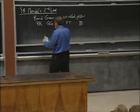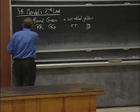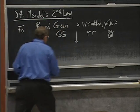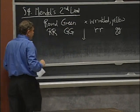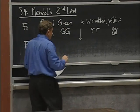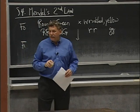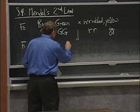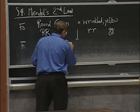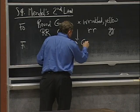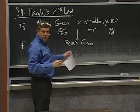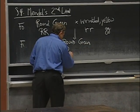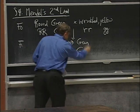So when we cross these guys together — this F0 generation of these two pure breeding parental strains — we get an F1 generation. The F1 generation: what is it phenotypically? What did it look like? Round and green. What was it genotypically? Big R, little r, big G, little g.